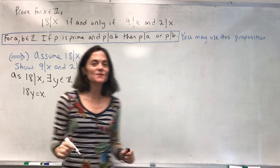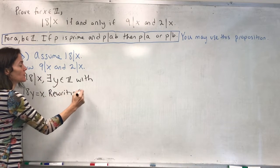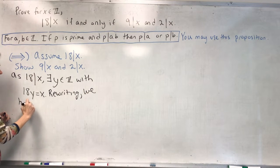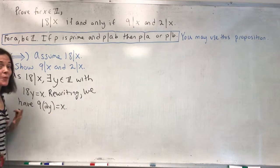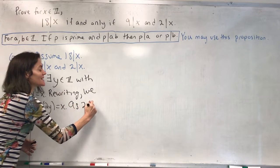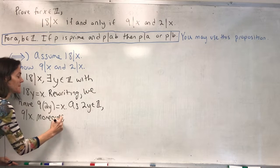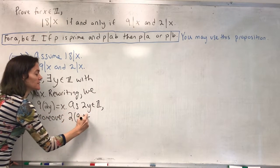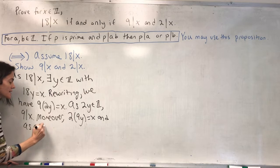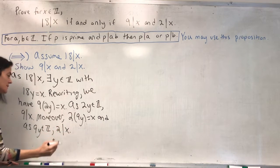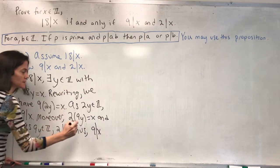You see that 18 is 9 times 2, so we may rewrite this. Rewriting this exact same expression, we have 9 times 2y is x. I group one way, and as 2y is an integer, 9 divides x. Moreover, we could also write it as 2 times 9y. As 9y is an integer, 2 divides x. Thus, we're done with this direction. We have shown 9 divides x, and 2 divides x.